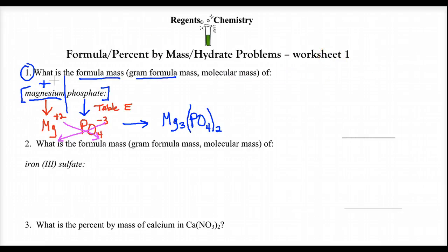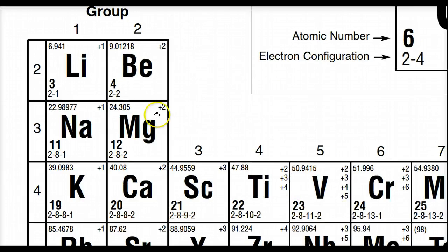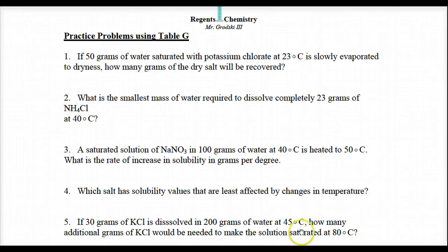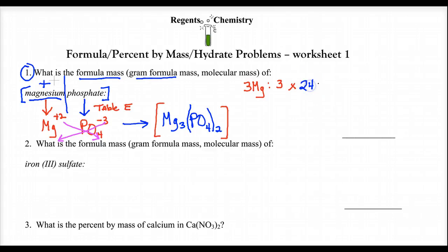Looking at our formula, in one of these there are three magnesiums. Three times the mass of one magnesium — going back to the periodic table, magnesium's atomic mass is 24.305 AMU, which we round to 24. So three times 24 is 72.